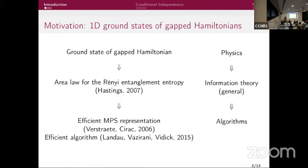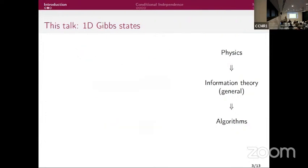From this information-theoretic criterion on gapped ground states, it has been proven that there exist efficient matrix product state representations — some kind of compressed tensor network description. Later, efficient algorithms to find them were also proven. The story is: start with a physical assumption (the gap), prove an information-theoretic criterion, and get algorithmic efficiency.